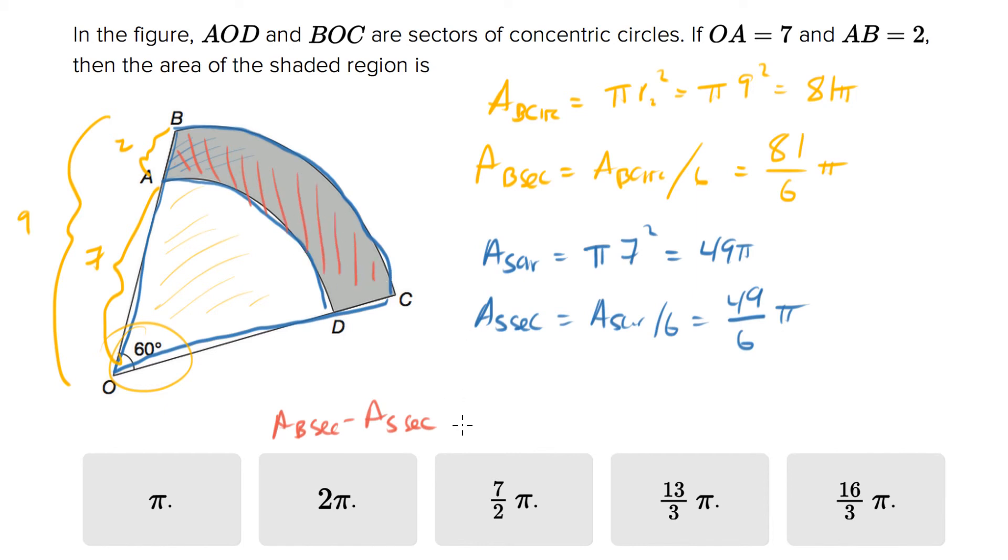That equals 81π/6 minus 49π/6. 81 minus 49 is 32, so we get 32π/6. We're going to simplify that by dividing by 2, giving us 16π/3, and that is your fifth answer choice.